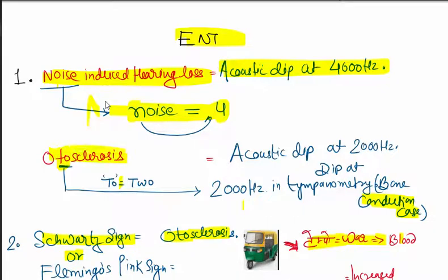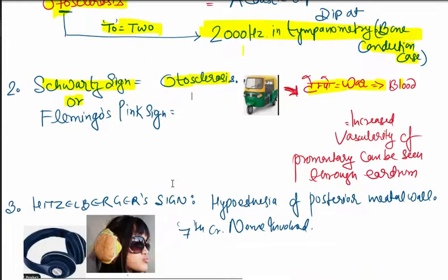Next, otosclerosis has two O's - 2000 Hertz. The tympanometry will show at 2000 Hertz acoustic dip at bone conduction hearing loss. What is Schwartz sign?